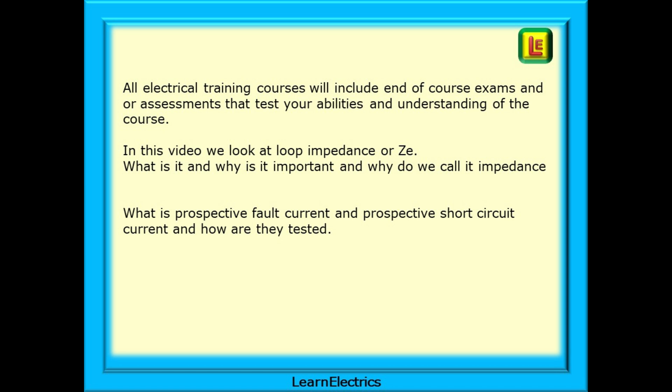In this video we look at loop impedance or ZE, what is it and why is it important. We can't do this without understanding the three common types of earthing systems, why are they different and how to test them. And then move on and ask what is prospective fault current and prospective short circuit current and where are they measured in the circuit.